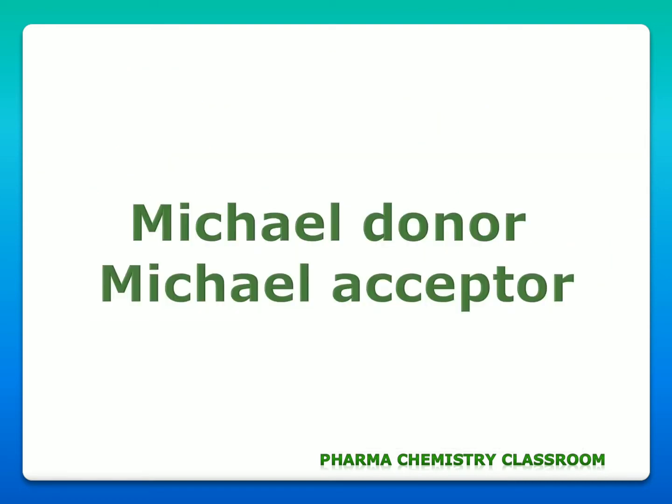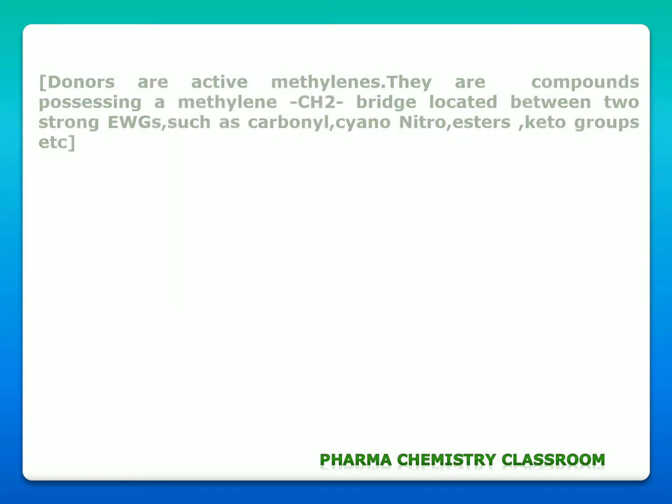Understanding the terms Michael donor and Michael acceptor is very important and makes our reaction very simple. First we will see what is Michael donor. Michael donors are active methylenes. Active methylenes are compounds possessing a methylene bridge located between two strong electron withdrawing groups such as carbonyl groups, cyano group, nitro group, esters, keto groups, etc.